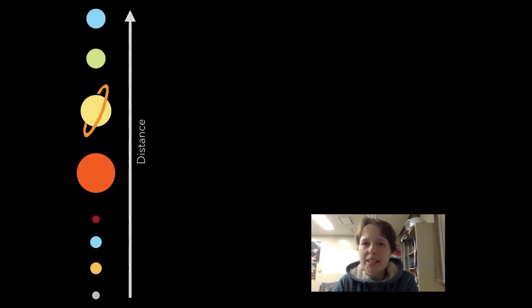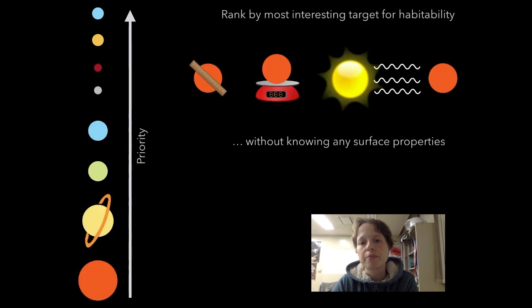But this brings us to a new problem. Such atmospheric spectroscopy for rocky, temperate planets is time-consuming and difficult. We therefore need a way of selecting planets most likely to reveal interesting results. But how do we select planets best suited for habitability without knowing any surface properties?